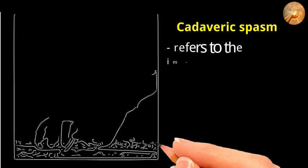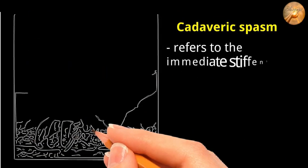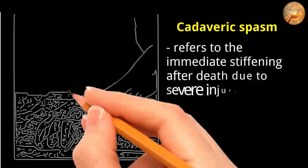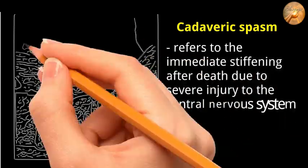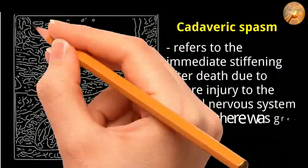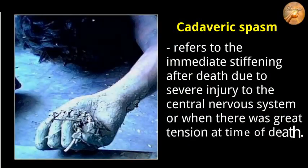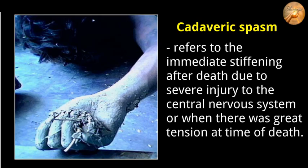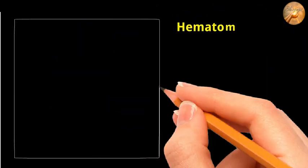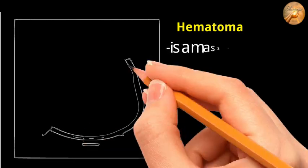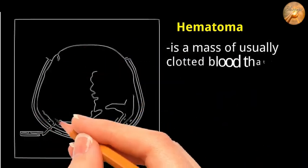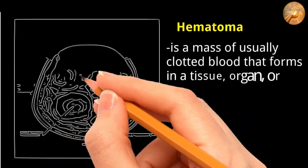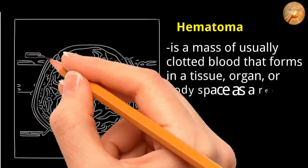Cadaveric spasm is the immediate stiffening after death due to severe injury to the central nervous system or great tension at the time of death. A hematoma is a mass of usually clotted blood that forms in a tissue, organ, or body space as a result of a broken blood vessel.